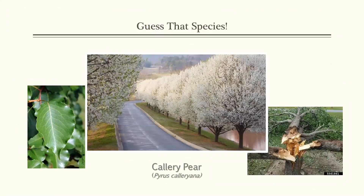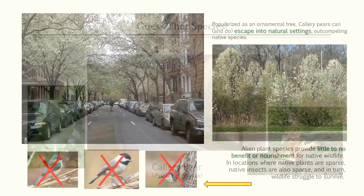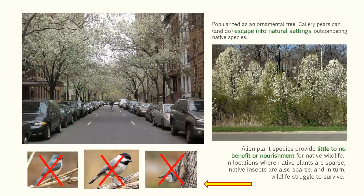The next species is Callery pear, popularized as an ornamental tree. When planted in urban spaces, yards, and gardens, escape into natural settings is generally inevitable, where it outcompetes native species. Non-native alien plants have no value as a food source for native insects and wildlife that have not evolved to use them. In locations where native plants are sparse, native insects will also be sparse, which greatly impacts our wildlife.